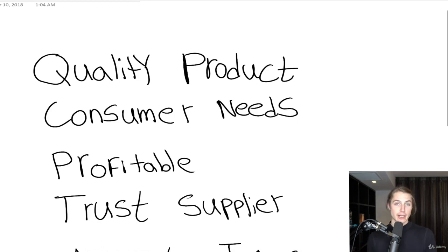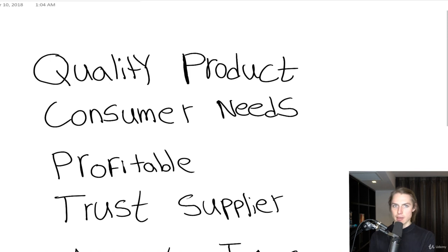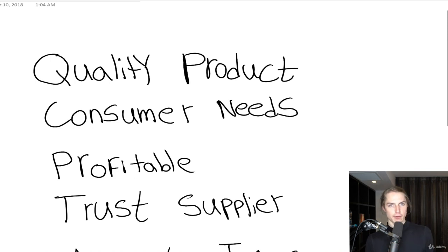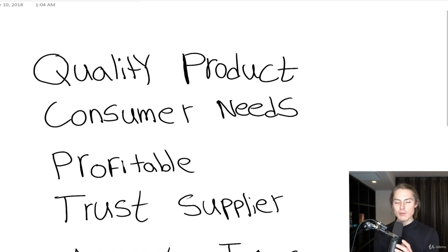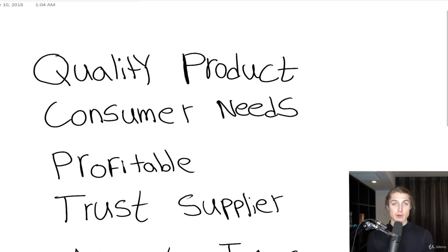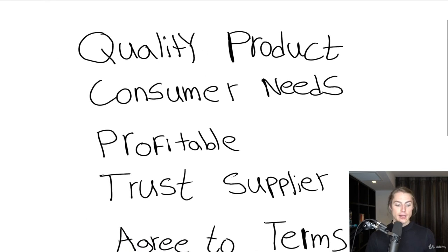All right, ordering section. You need to be able to pull the trigger and choose a supplier and actually source the product before you can order, of course. So we're going to go over when you know if you should go ahead and order the product with the supplier or not.